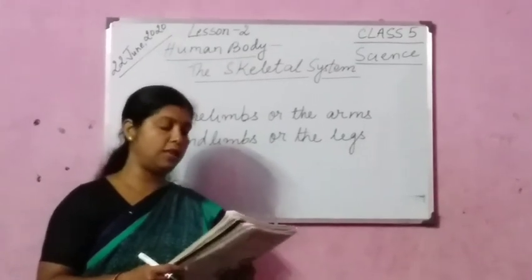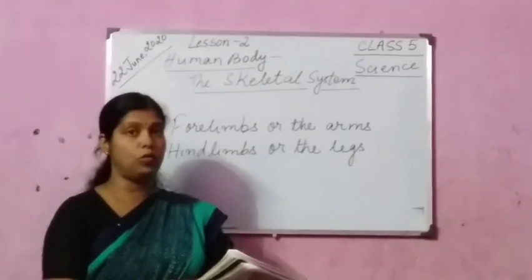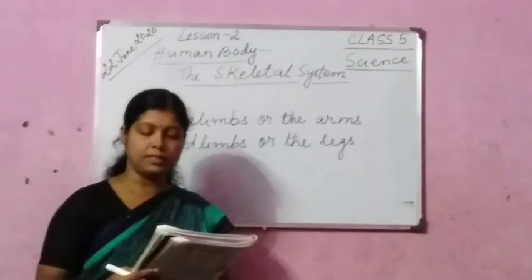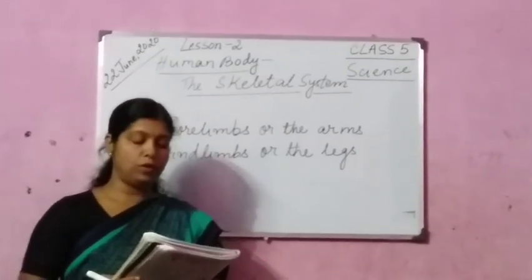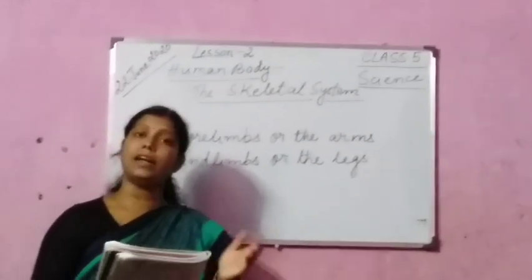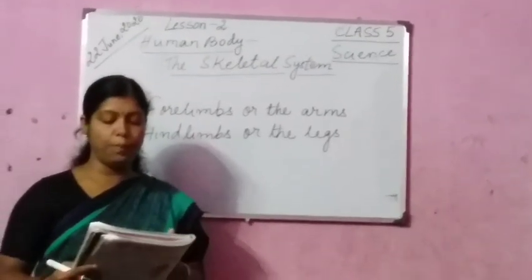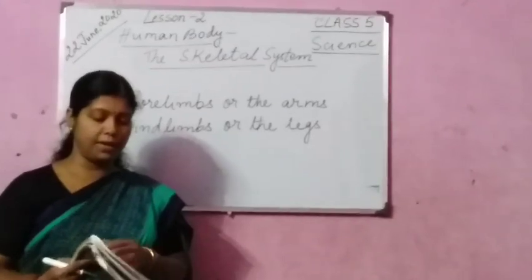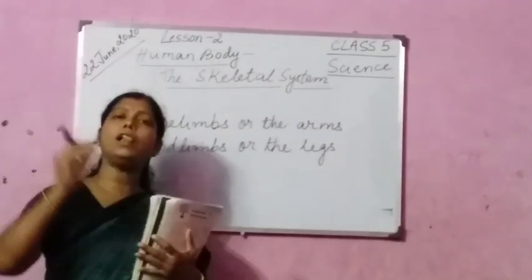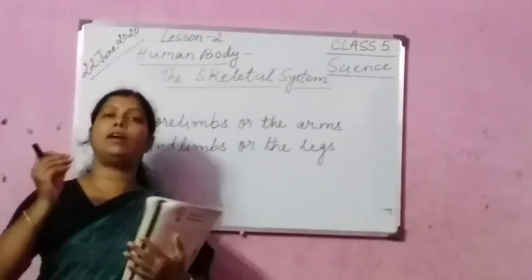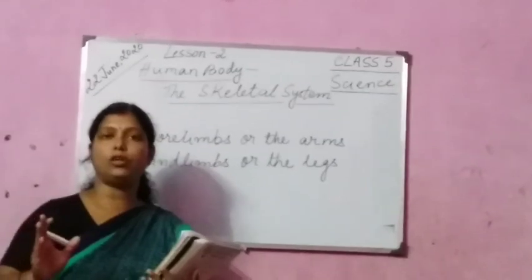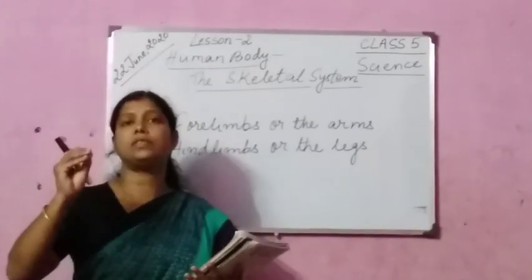Many small bones join together to make up the wrist. Forelimbs along with the muscles and joints provide movement to the arms and help us to perform different activities like writing, eating, and holding things. It helps you to do all the activities you do with your hands — whether you are writing, eating, wiping, or erasing the board.